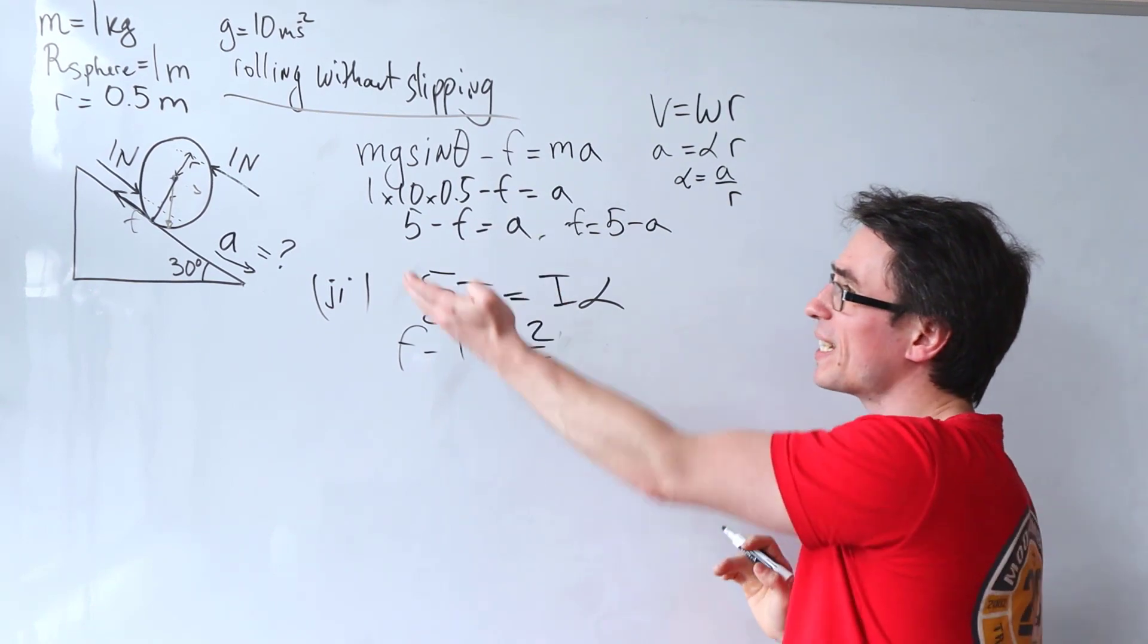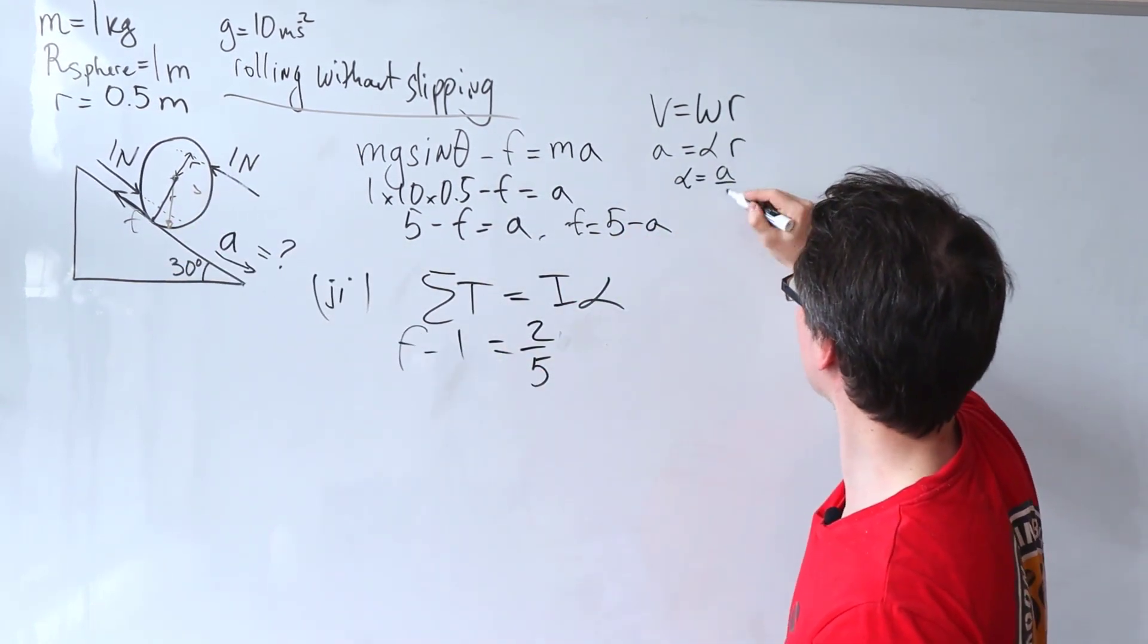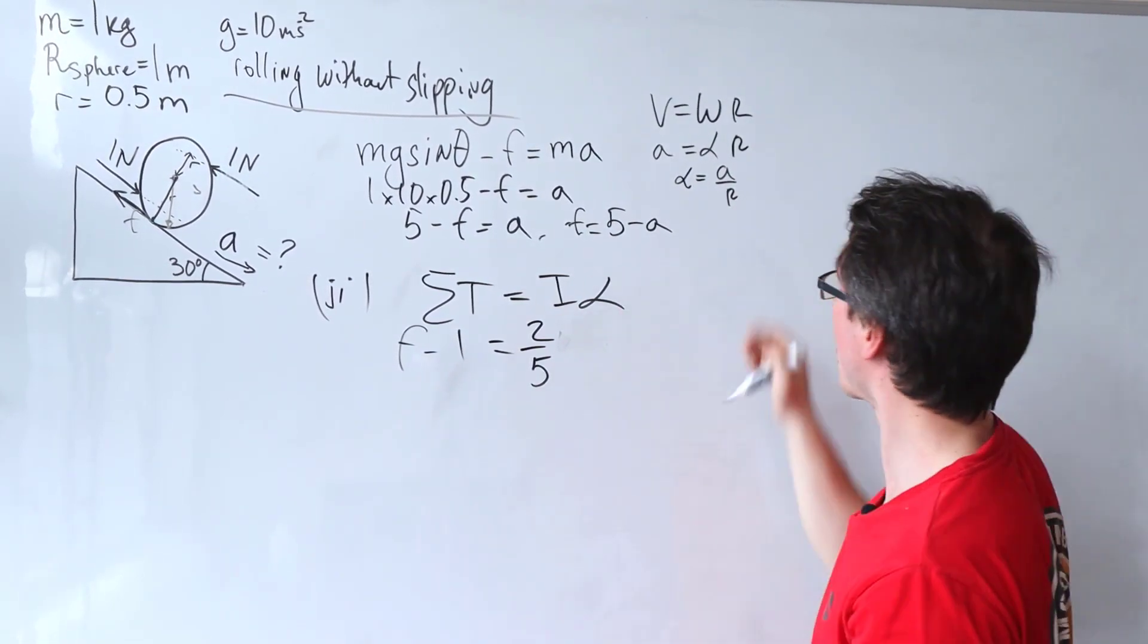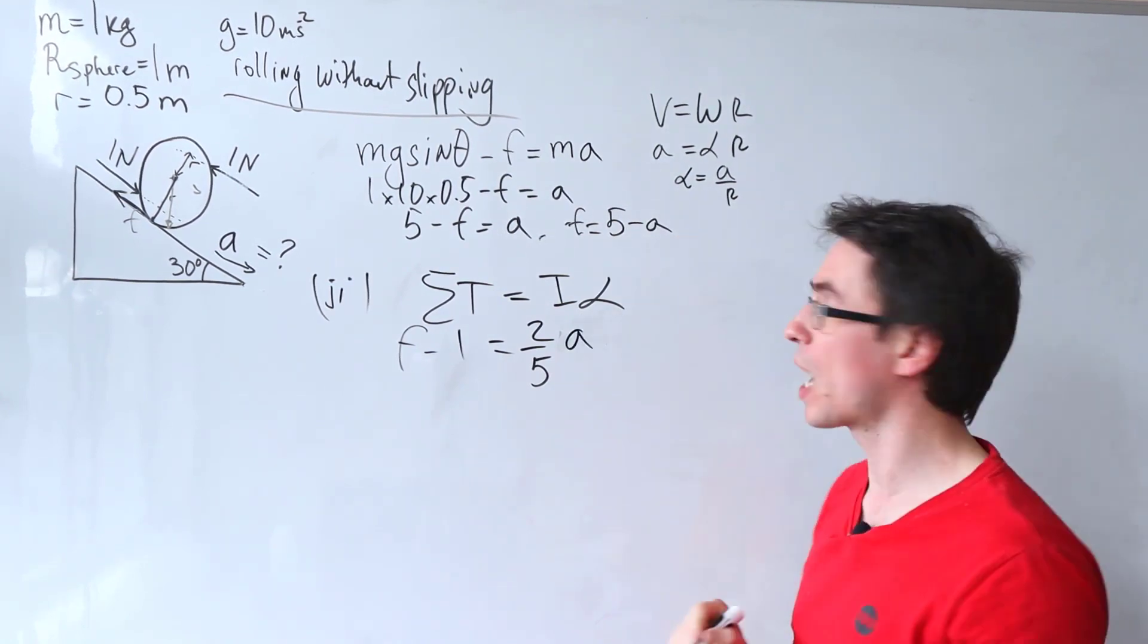However, in this case, our radius in terms of the rotation of the sphere, let's call this capital R actually just to be consistent, is just equal to 1. So alpha will just be a over 1, i.e. just a.